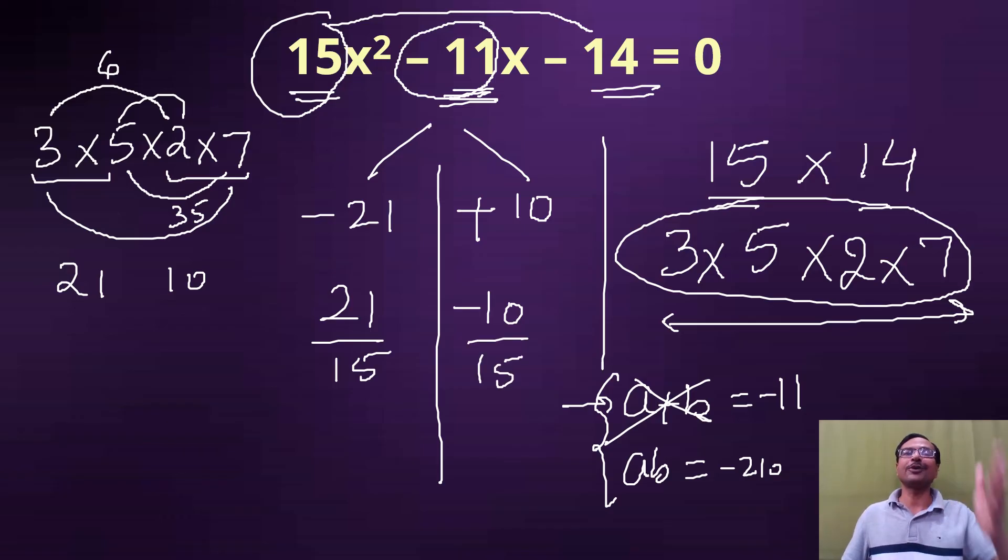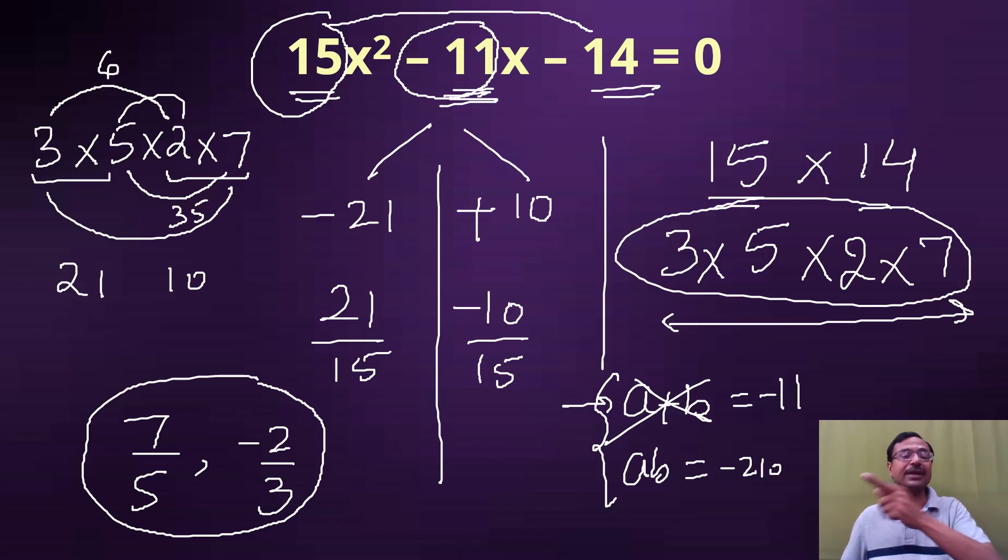And finally divide by the coefficient of x². Just divide both of them by 15, you are going to have the roots of the quadratic equation. 21 upon 15 reduced is 7 upon 5. I've cut the common factor 3. And minus 10 upon 15 is minus 2 upon 3. So you can check friends whether the solutions of this quadratic equation is 7 by 5 and minus 2 by 3 or not.